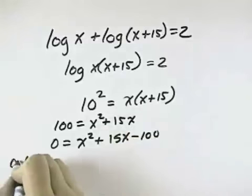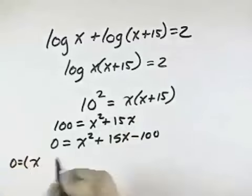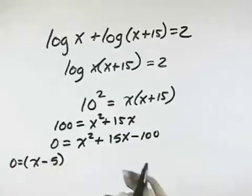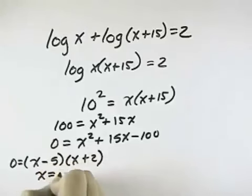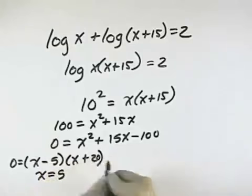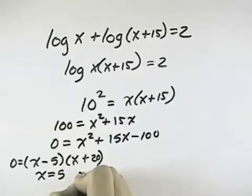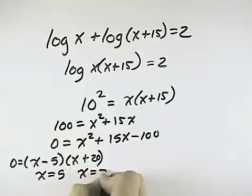This will factor into x minus 5 times x plus 20. So solving this, for the first one I get x equals 5, and for the second one, x plus 20, when I set that equal to 0, x equals negative 20.